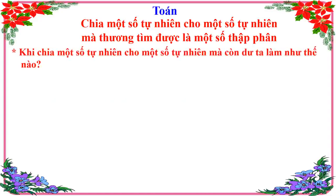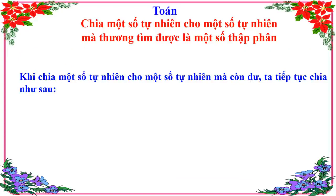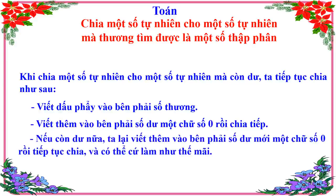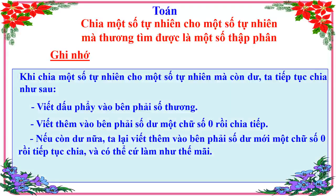Khi chia một số tự nhiên cho một số tự nhiên mà còn dư, ta tiếp tục chia như sau: viết dấu phẩy vào bên phải số thương; viết thêm vào bên phải số dư một chữ số 0 rồi chia tiếp. Nếu còn dư nữa, ta lại viết thêm chữ số 0 vào bên phải số dư mới rồi tiếp tục chia, và có thể cứ làm thế mãi. Đây chính là ghi nhớ của bài học hôm nay. Các em hãy học thuộc để làm bài tập thật tốt.